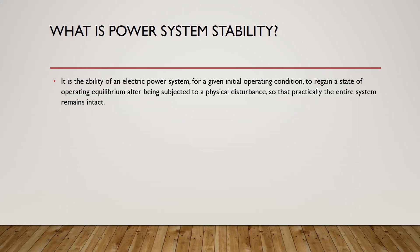For example, if we are talking about frequency, the power system reaches a steady state frequency. Or if we are talking about voltage, it reaches a steady state — a constant value of voltage maintained at all buses. This is an example of the meaning of an operating equilibrium state.